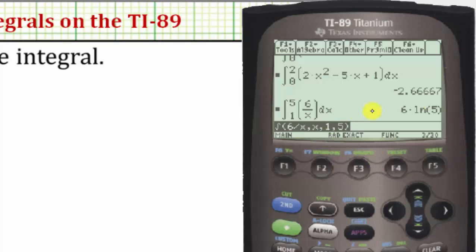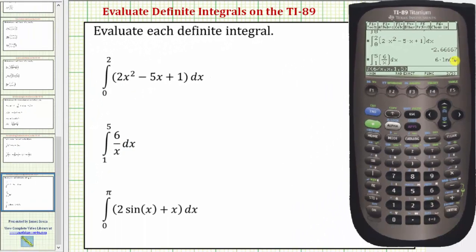And notice how it's giving us the exact value as 6, natural log 5. Again if we do want the decimal approximation, we can press diamond enter and it will give us the decimal approximation.